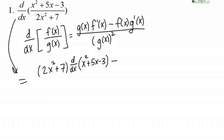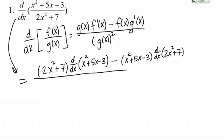Now we have minus F of X times G prime of X. F of X is the top function, so that's X squared plus 5X minus 3 times G prime of X, so the derivative of the denominator, 2X squared plus 7. And all of that is over the denominator squared. So that's the entire quantity, 2X squared plus 7 squared.